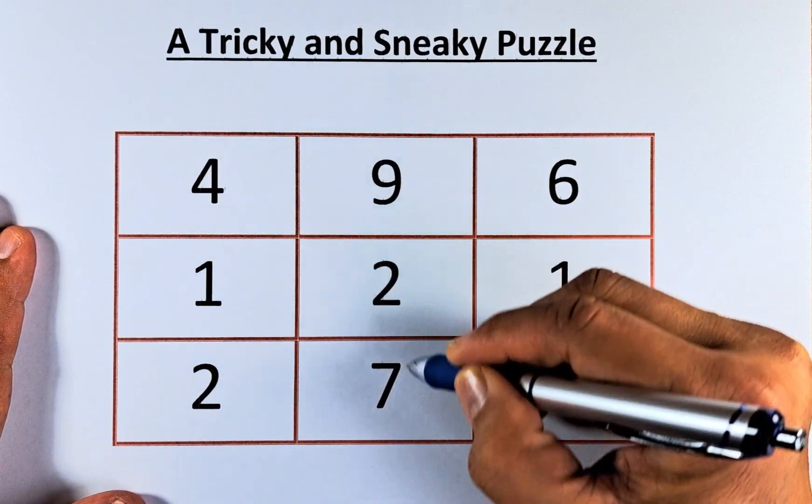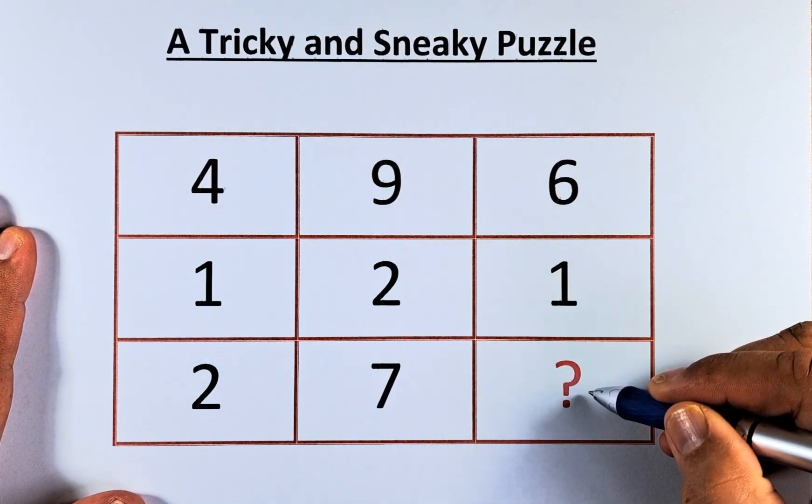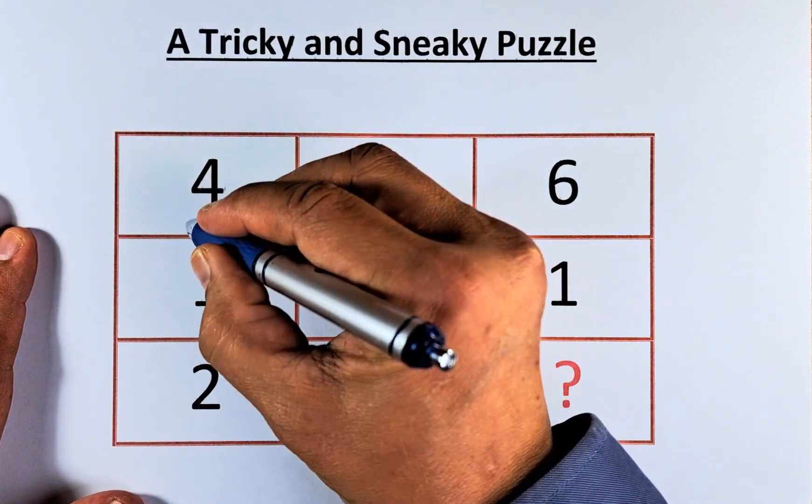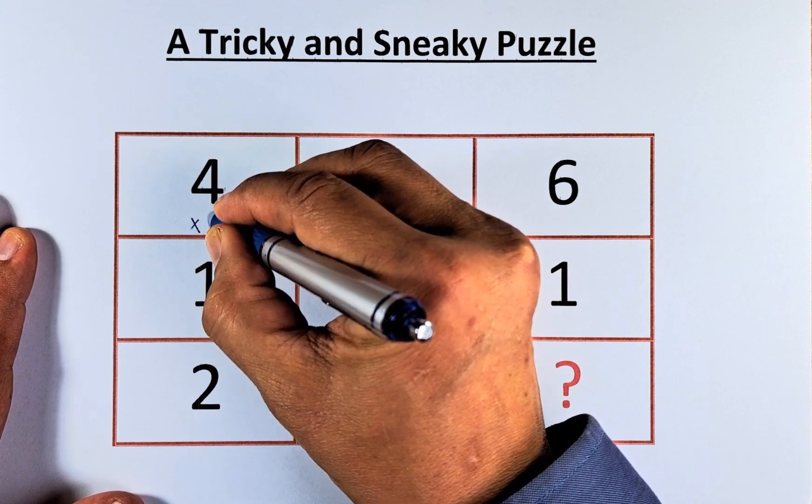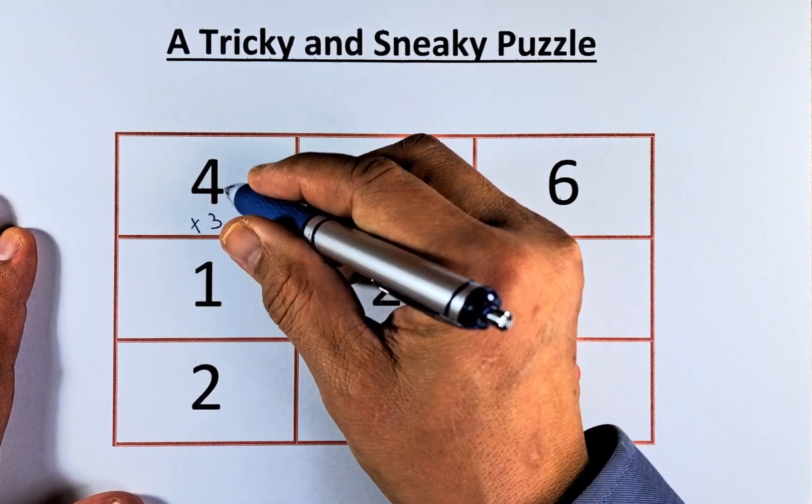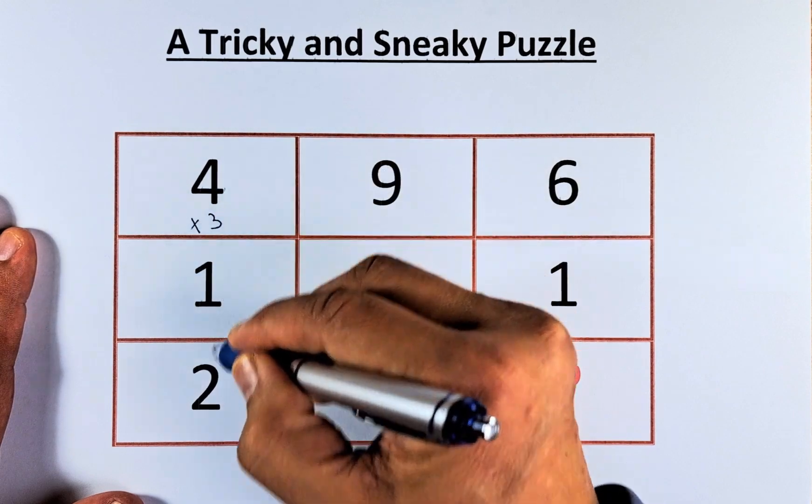So this is actually 12, this is 27, this is 1 and a question mark. To get 12, you need to multiply 4 by 3. 4 times 3 is 12, so that's how you get 4 times 3 equals 1, 2.